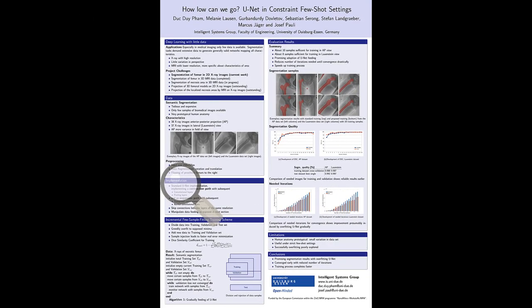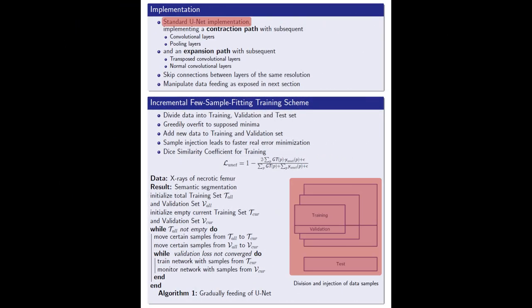Our dataset is divided into training, validation and test set. But instead of initializing U-Net feeding with the whole dataset, we only use a few samples. We train our model until convergence and use the generated model as initial starting point for further steps.